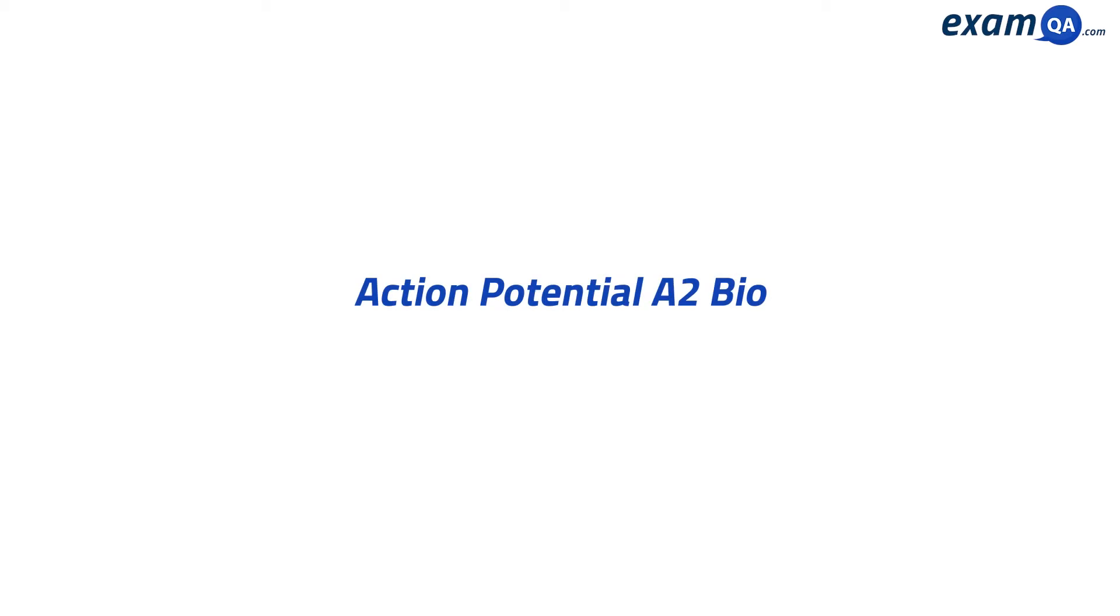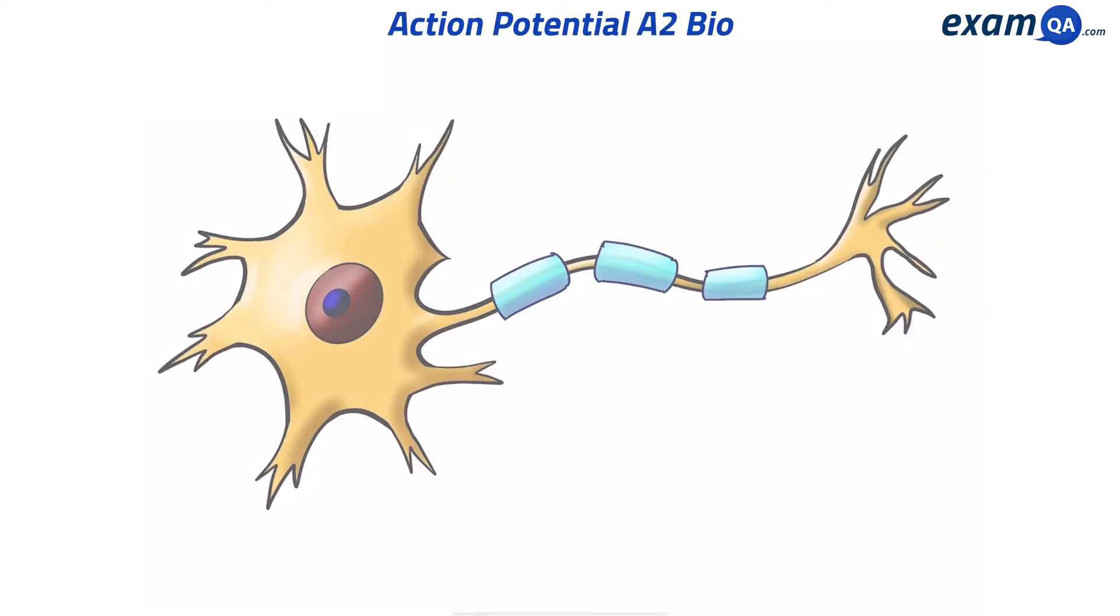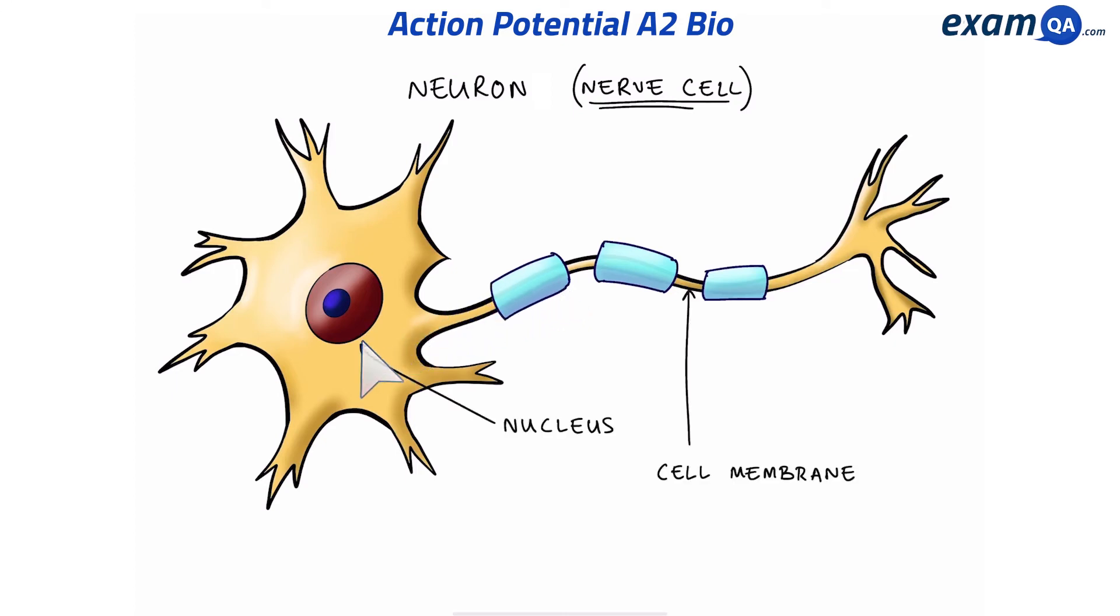Welcome to this video about neurons. Here we have a neuron, also known as a nerve cell. Just like a normal cell, it has a nucleus, a cell membrane, and other components that a normal body cell has.